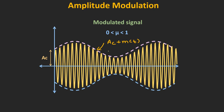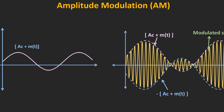The envelope detector works only when Ac plus m(t), or the envelope signal, is greater than 0 — in other words, when the modulation index of the AM signal is less than 1. Whenever the modulation index is greater than 1, the envelope signal crosses zero and there is a 180-degree phase reversal at the crossover point. If we try to recover such an AM signal using the envelope detector, there will be distortion in the recovered signal. So for this circuit to work properly, the modulation index should be less than 1.